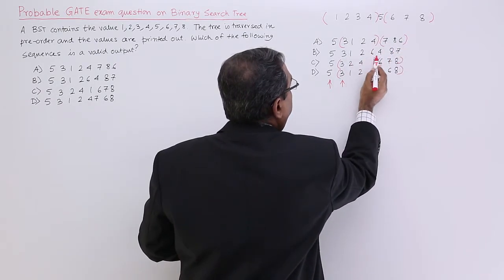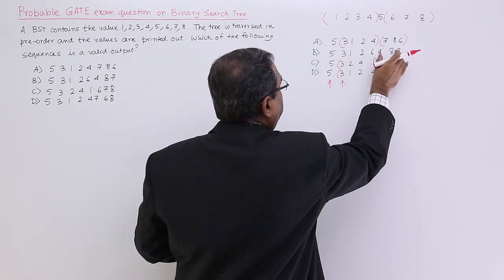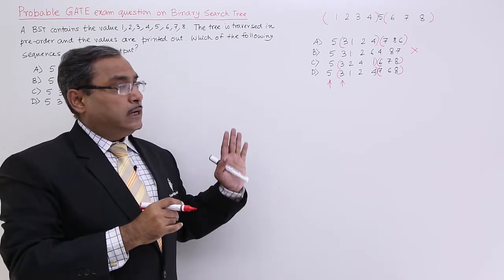But here you see this 1, 2, 3, 4, this option is not, they are not clustered. And say 6, 7, 8, they are not clustered. So this option cannot be the choice. I have discarded that one.